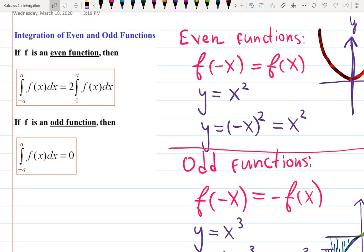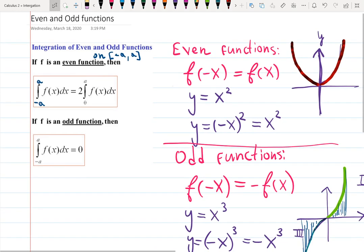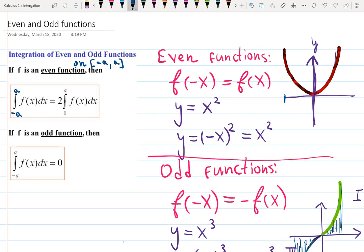If the function is even, also I want to mention it's not supposed to be even everywhere, just even being even on negative a and a is good enough because we're integrating from negative a to a. This is really good enough to say that the function, if the function is even and we're integrating this function from negative a to a, then instead of doing the integration from negative a to a,